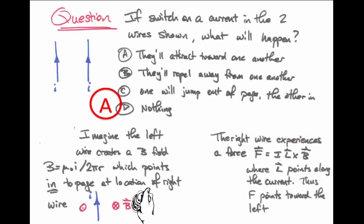L has to point along the direction of the current in the right-hand wire. Since that points up and B points into the page, F has to point toward the left by the right-hand rule.